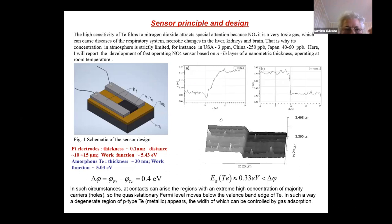The high sensitivity of tellurium films to nitrogen dioxide attracts special attention because it's a very toxic gas which can cause diseases of the respiratory system, necrotic changes in the liver, kidneys, and brain.